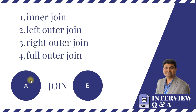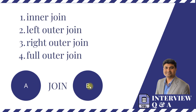Left outer join — in the same condition, if we mark a table as the left table, left outer join will bring in all the records from Table A and the matching data from Table B. If Table A has 100 records and there are only 90 matching records, the output will still be 100 records, and for the remaining 10 records missing in Table B, the values will come in as null.